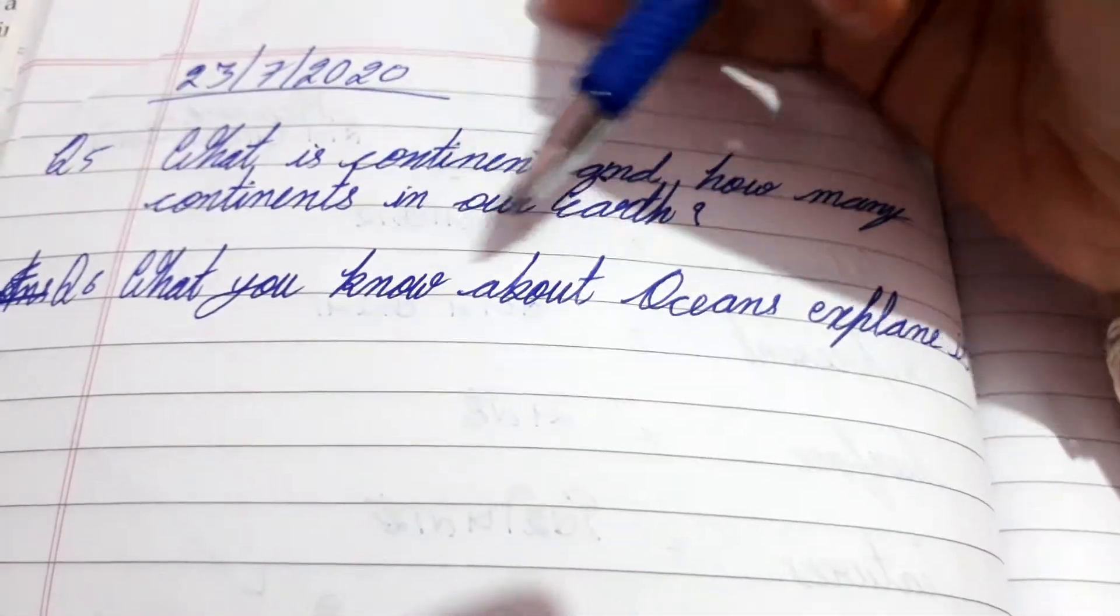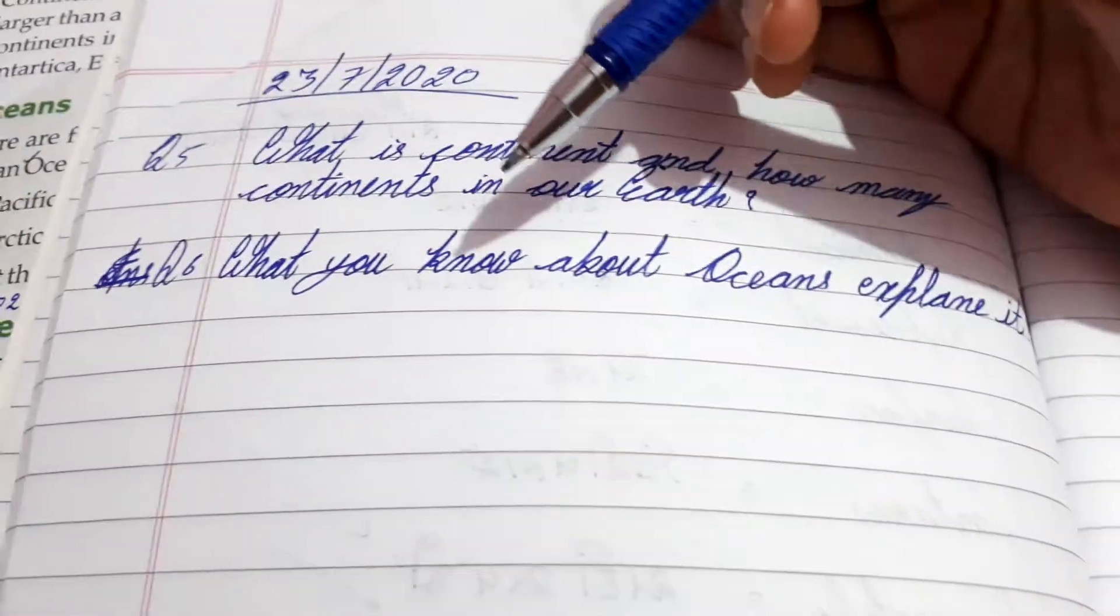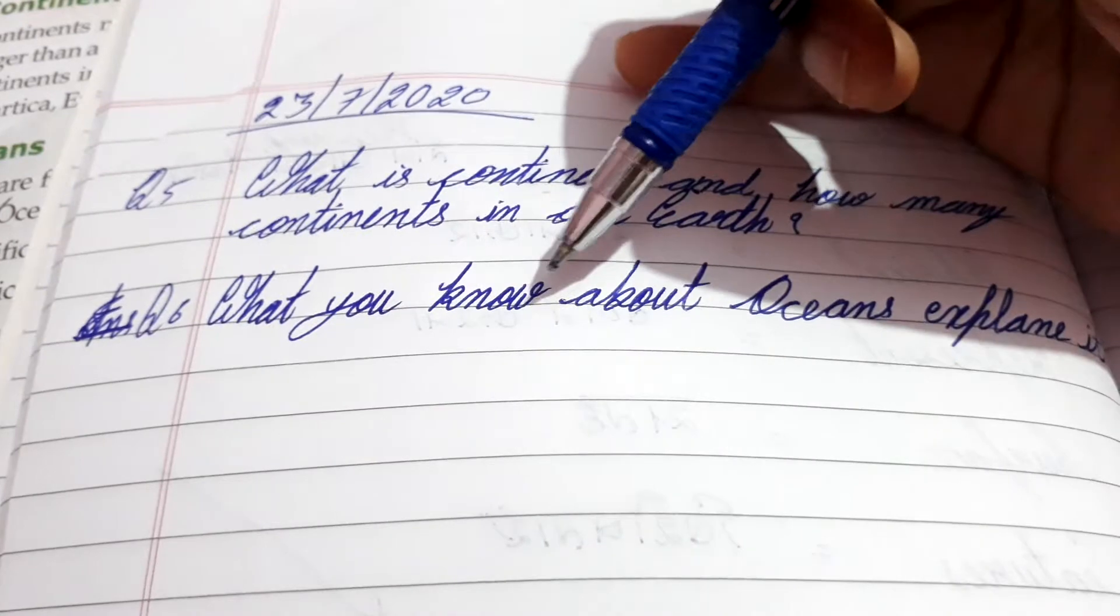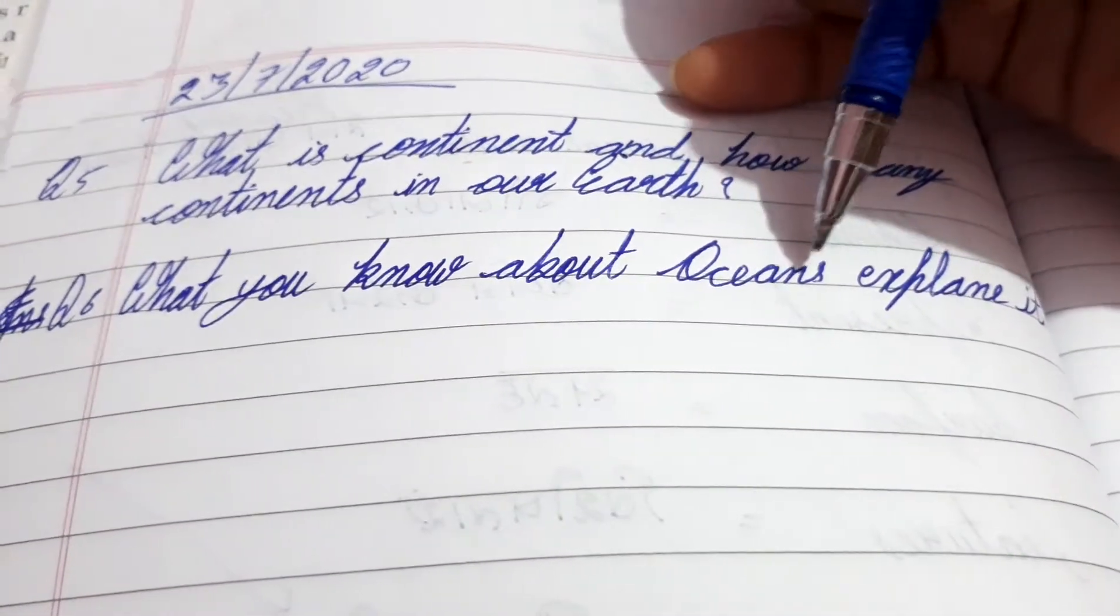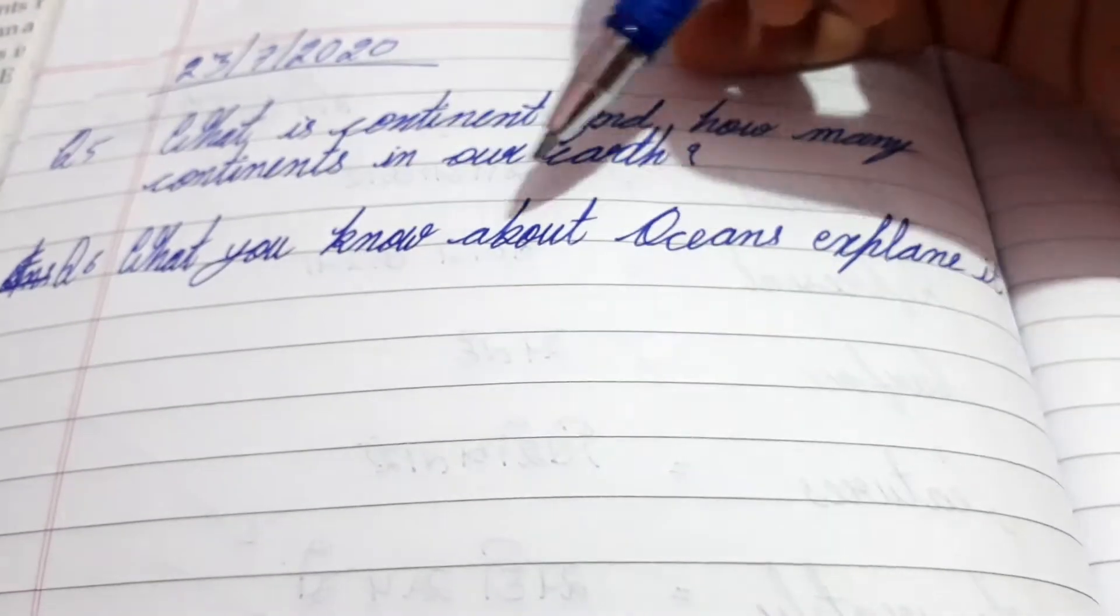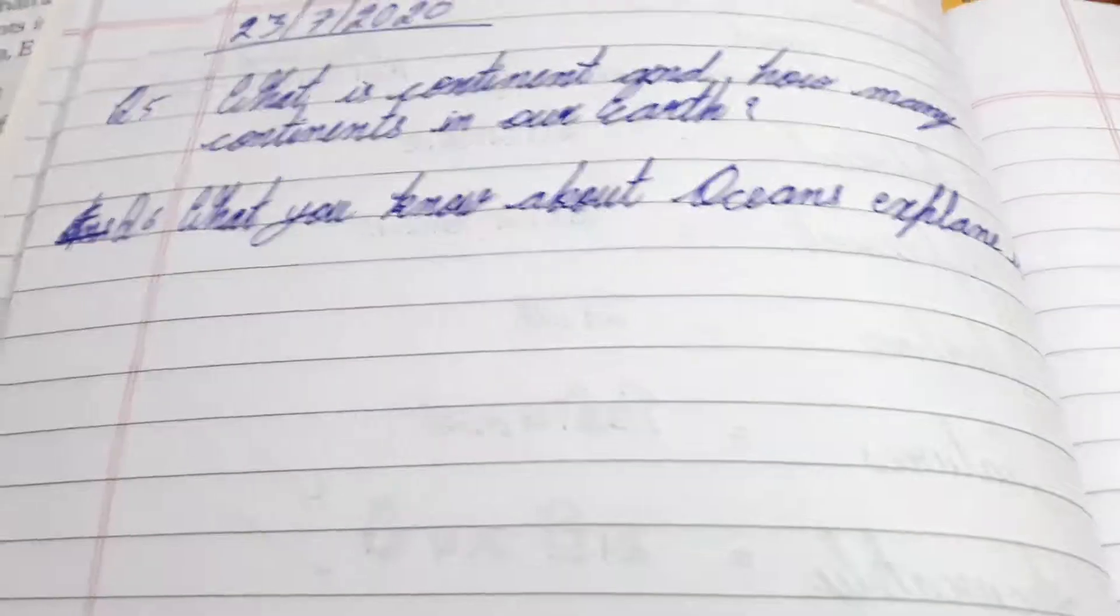What you know about oceans, explain it. What you know, W-H-A-T, Y-O-U, K-N-O-W, A-B-O-U-T, O-C-E-A-N-S, oceans. E-X-P-L-A-I-N, explain, I-T, it. What you know about oceans, explain it. What you know, it means explain it.